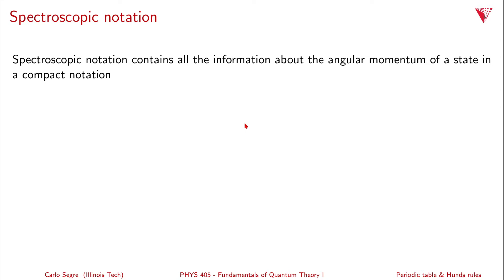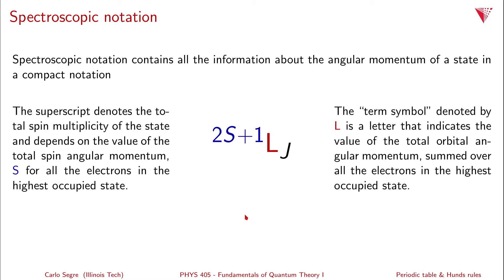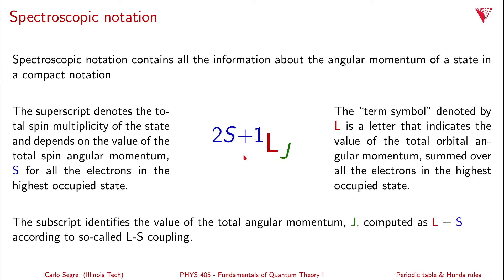Before discussing Hund's rules, let's review spectroscopic notation. The term symbol contains all the angular momentum information in a compact form. The letter L indicates the total orbital angular momentum summed over all electrons in the highest occupied state. The superscript denotes the total spin multiplicity 2S+1, where S is the sum of unpaired electron spins. The subscript j is the total angular momentum computed by coupling L and S.